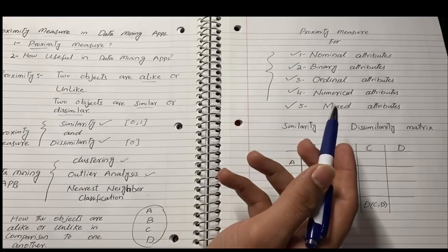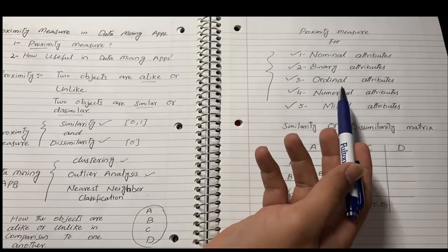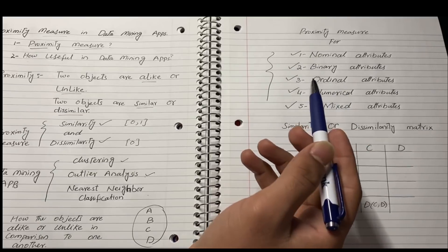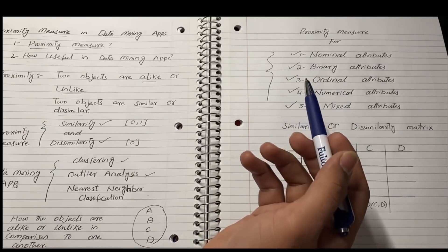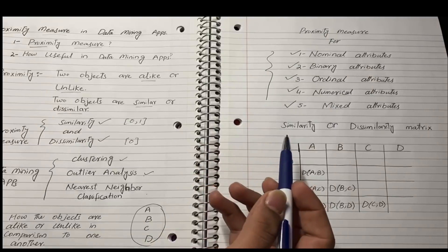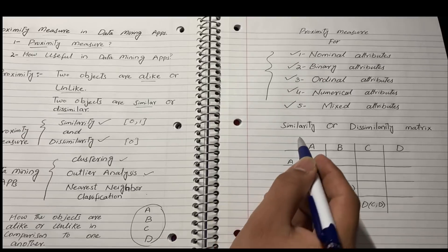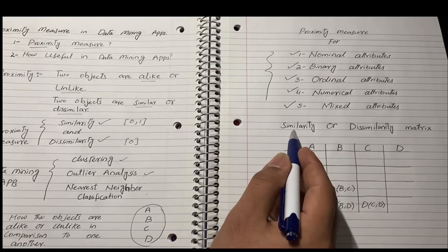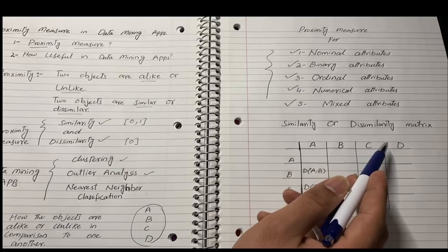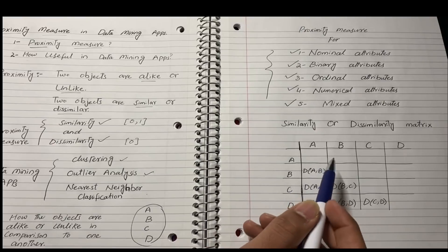In the next videos, I will make separate videos for each category of attribute for better understanding. Before we jump to those topics, let's see how you can visualize whether objects are similar or dissimilar. I created a similarity or dissimilarity matrix. For example, we have four objects — A, B, C, and D — both vertically and horizontally, and we find the differences between each pair.